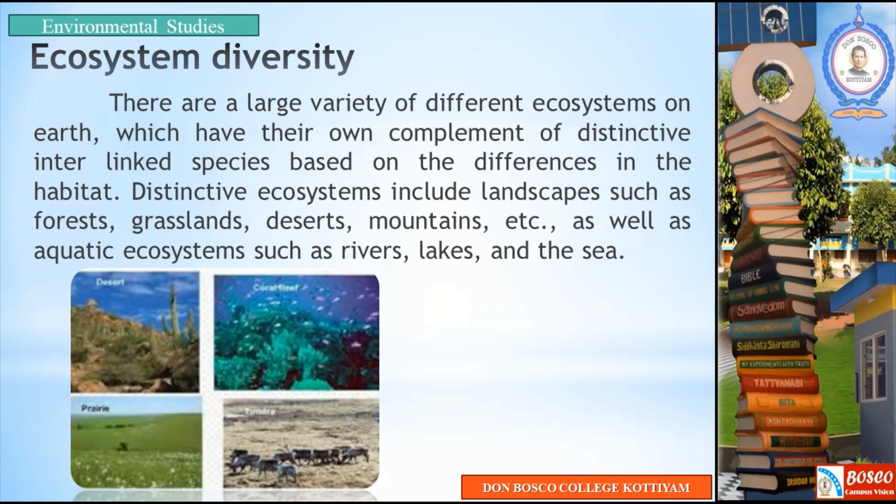Distinctive ecosystems include landscapes such as forests, grasslands, deserts, mountains, as well as aquatic ecosystems such as rivers, lakes and the sea. In a specified area, there are different types of ecosystems, representing ecosystem diversity.